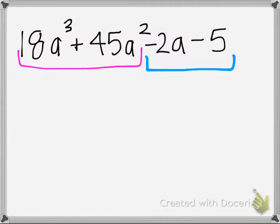We need to think of a number that can go into 18 and 45, so 9. And they both have A's in common, so A squared.